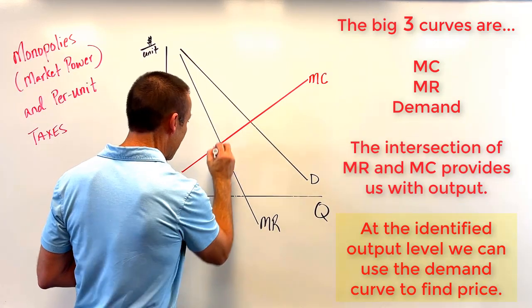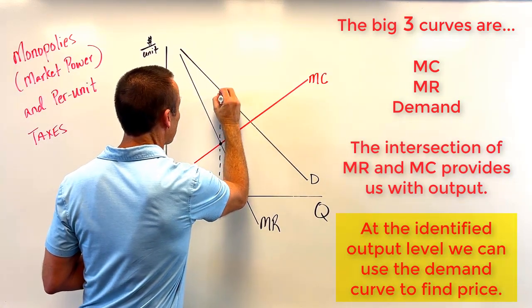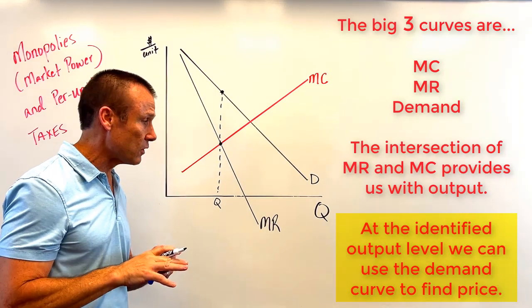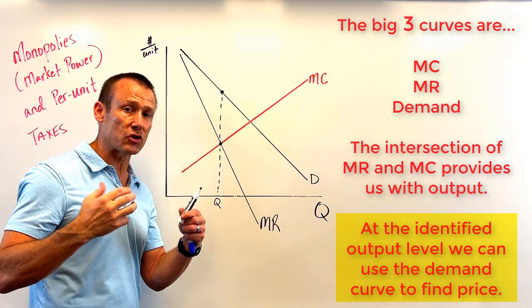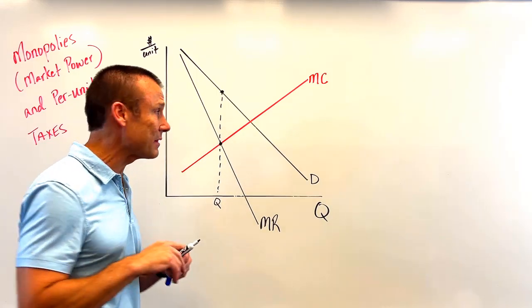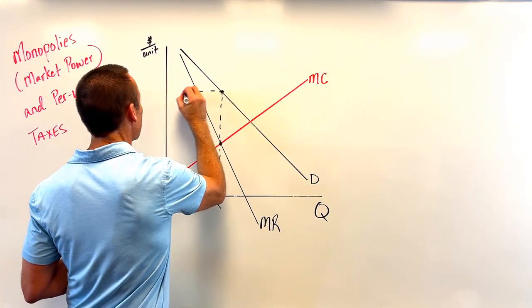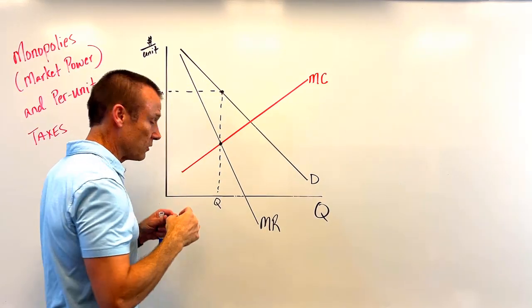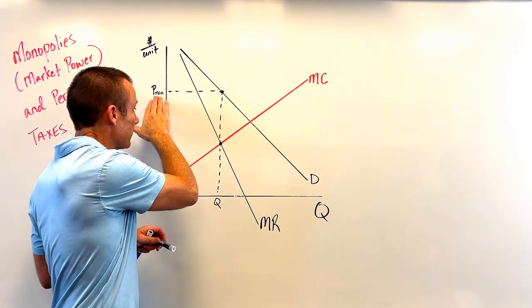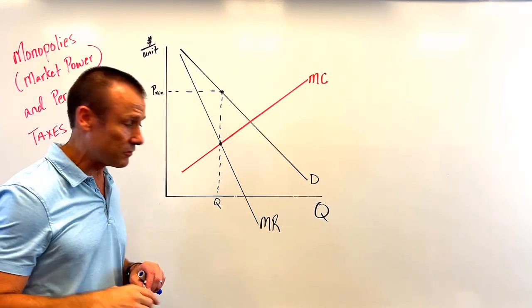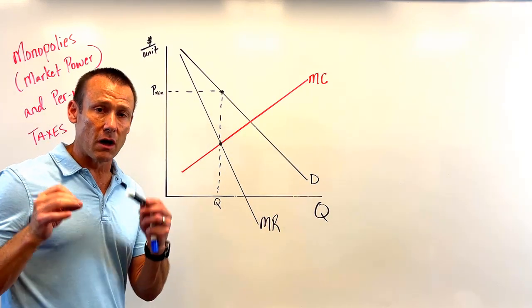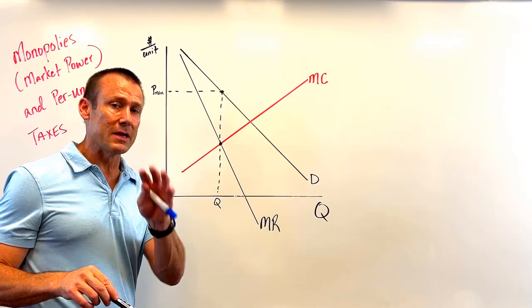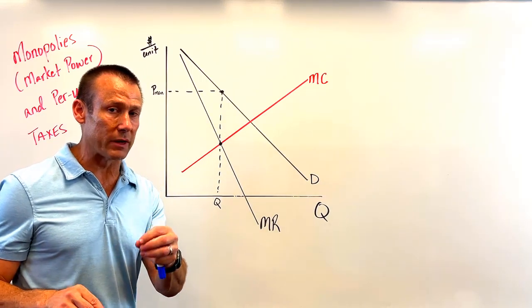Now you take that output up to the demand curve because what we're basically saying is, what is the highest price the firm can charge and sell this level of output? What tells me that is the demand curve. So there we go, we get price monopolist right there, and so you can see that pricing power. We're charging a price above the MR equals MC at our level of output.